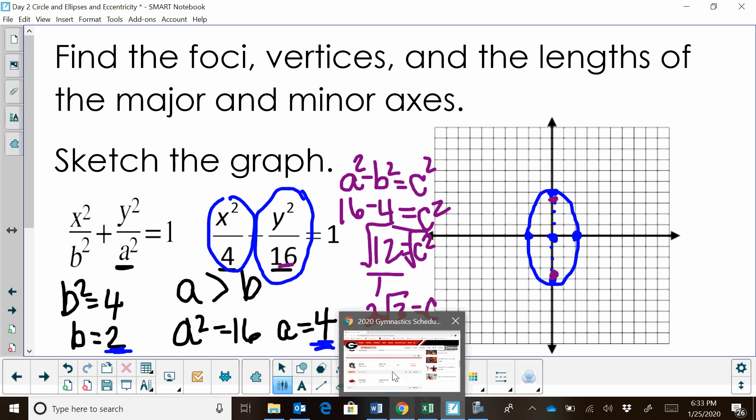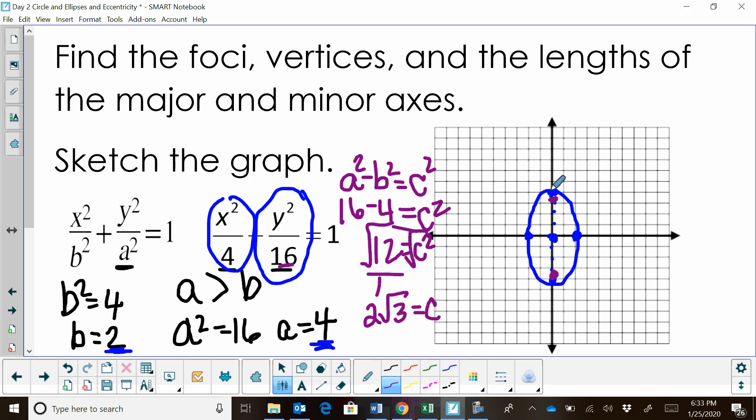Now let's write these ordered pairs. My vertices are at 0 and plus or minus 4, because they're going up and down the y-axis. My co-vertices are at plus or minus 2, because they're along the x-axis, comma 0. And my foci are also along the y-axis, so it's 0 and then plus or minus 2 square roots of 3. That's how you find those points.